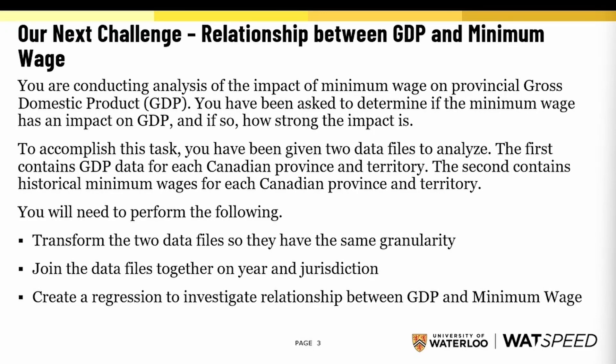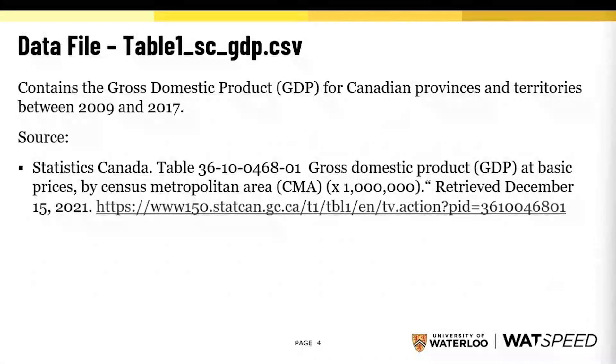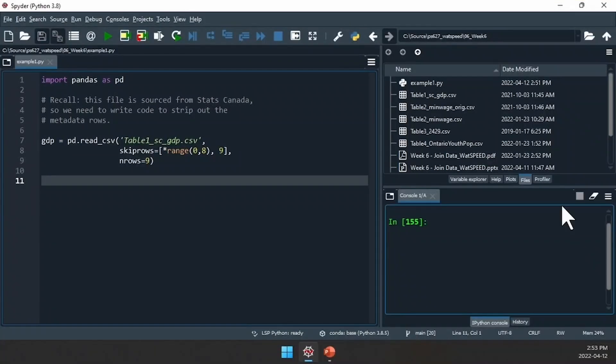First, let's take a look at our data files. We'll be looking at table1scgdp.csv, which contains the gross domestic product for Canadian provinces and territories between 2009 and 2017. This was retrieved from Statistics Canada. Let's take a look at this file in Spyder.